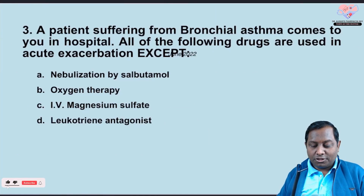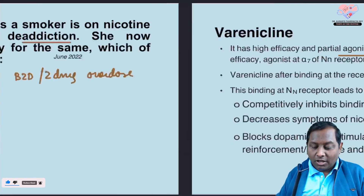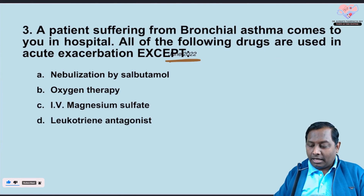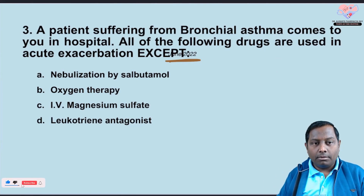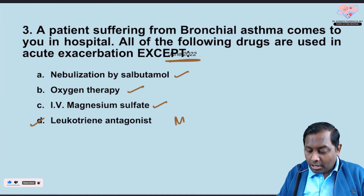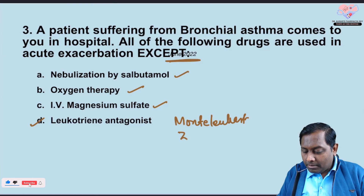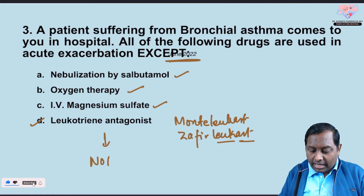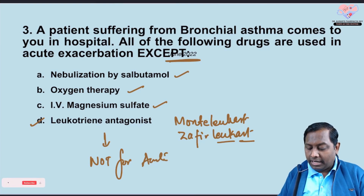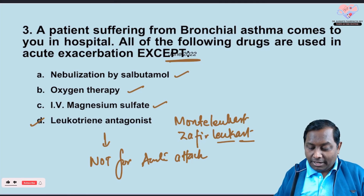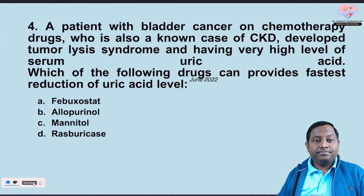Question three: a patient suffering from bronchial asthma comes to the hospital. Which drug is used for acute exacerbation? These questions are from June 2022. Nebulization with salbutamol, oxygen, and IV magnesium sulfate have all shown very good results in acute exacerbation. However, leukotriene receptor antagonists — like montelukast, zafirlukast, and pranlukast — can be used for prophylaxis but are not effective for acute exacerbation.